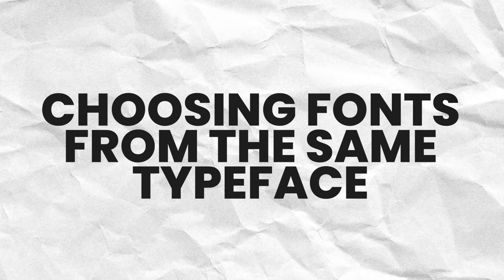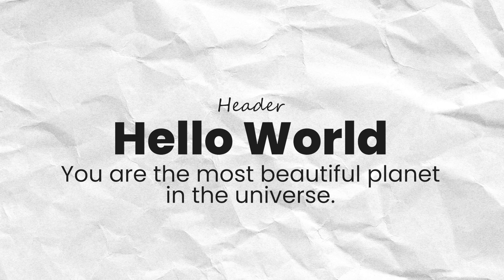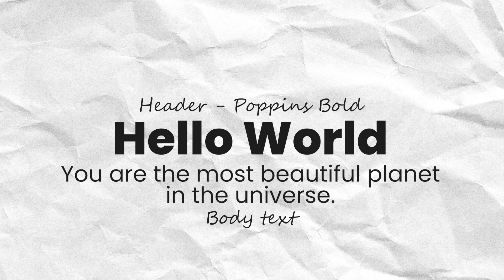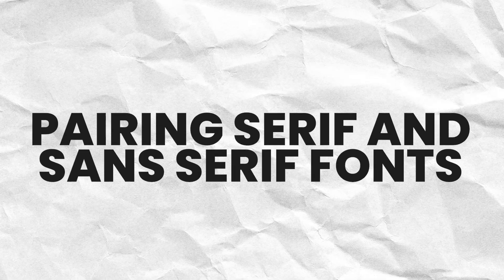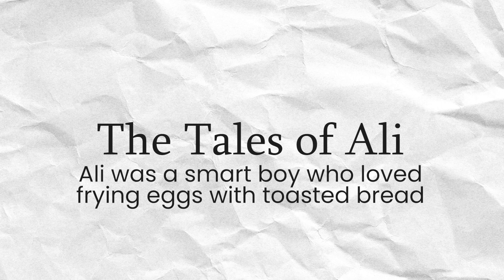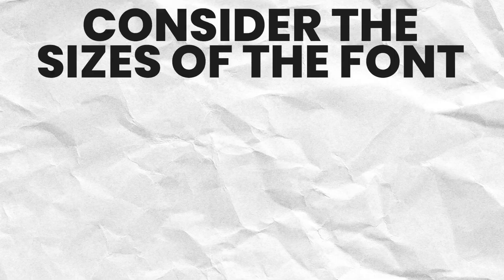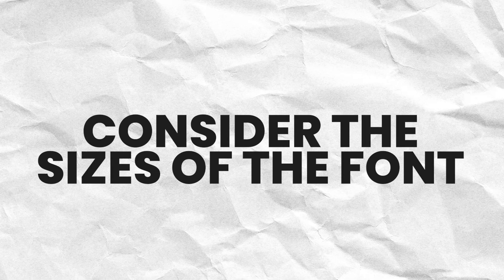Let's look at some tips for pairing fonts. The first tip is choosing fonts from the same typeface. For example, making your header Poppins Bold and the body text Poppins Regular or Poppins Thin. This reduces the headache of finding fonts that work well together and makes font pairing easy. The second tip is pairing Serif and Sans Serif fonts, which creates a clear contrast and helps viewers easily identify the title versus the body text.